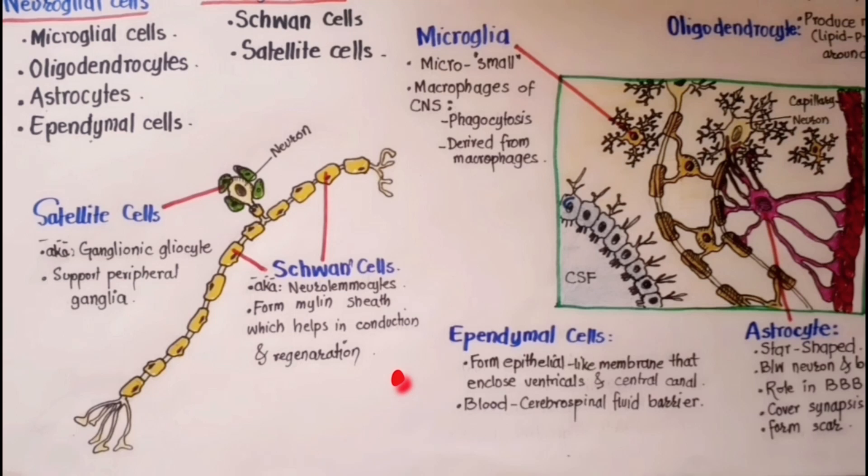Lastly, we have the satellite cells. Satellite cells are the peripheral glial cells sometimes known as ganglionic gliocytes. They are small flattened cells that mainly support the ganglia within the peripheral nervous system.